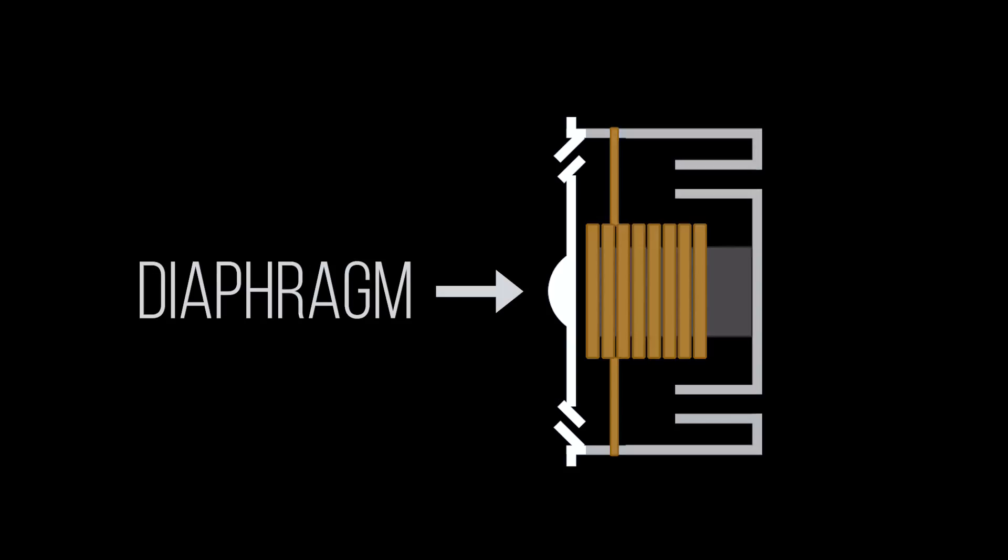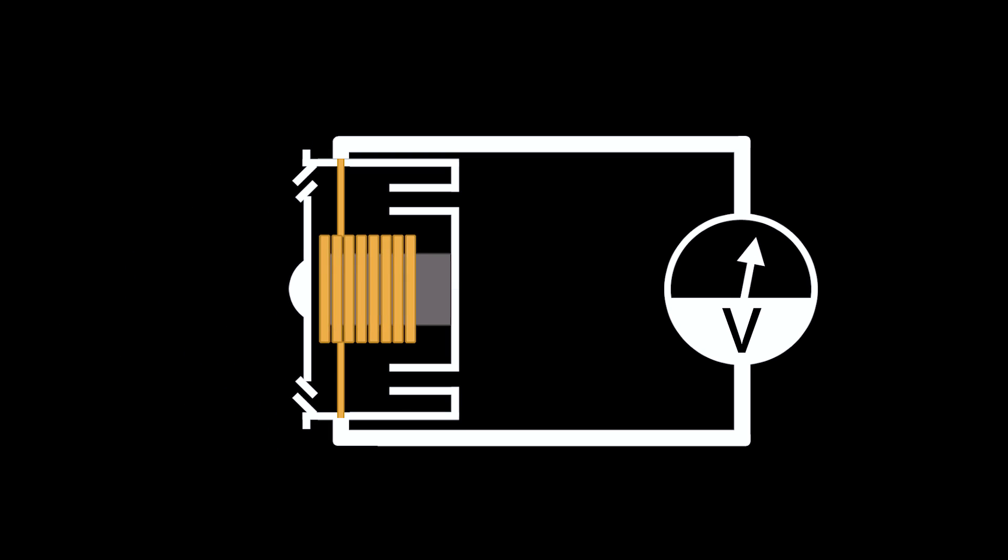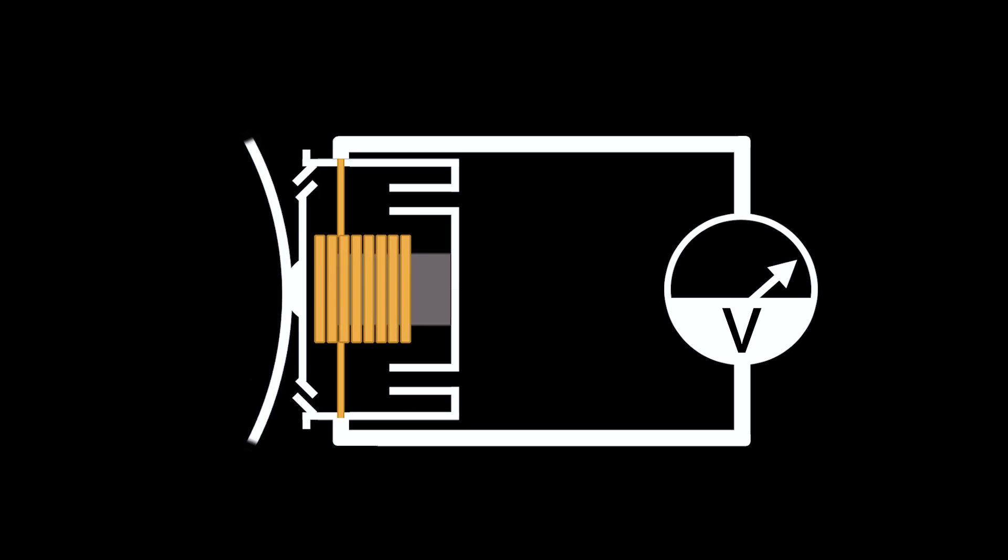At their most basal construction, microphones consist of a thin surface or diaphragm which moves when sound pressure waves are incident upon it. When something makes noise, it sends pressure waves through the air, which are powerful enough to cause a thin membrane to vibrate in kind. The movement of the diaphragm is then converted into an electric signal by some method — most simplistically by using a coil and magnet arrangement. The movement of the diaphragm perturbates a coil in the presence of a magnetic field, inducing a voltage in the coil which we can measure as an electric signal. It's essentially the reverse process of a speaker.